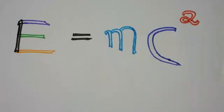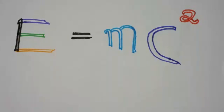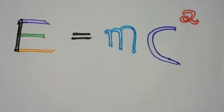Hello there, welcome back to the Physics Colony. We are going to derive the easiest derivation of E equals MC squared — the best formula of mankind — so I'm not wasting much of your time, let us simply start deriving this equation.